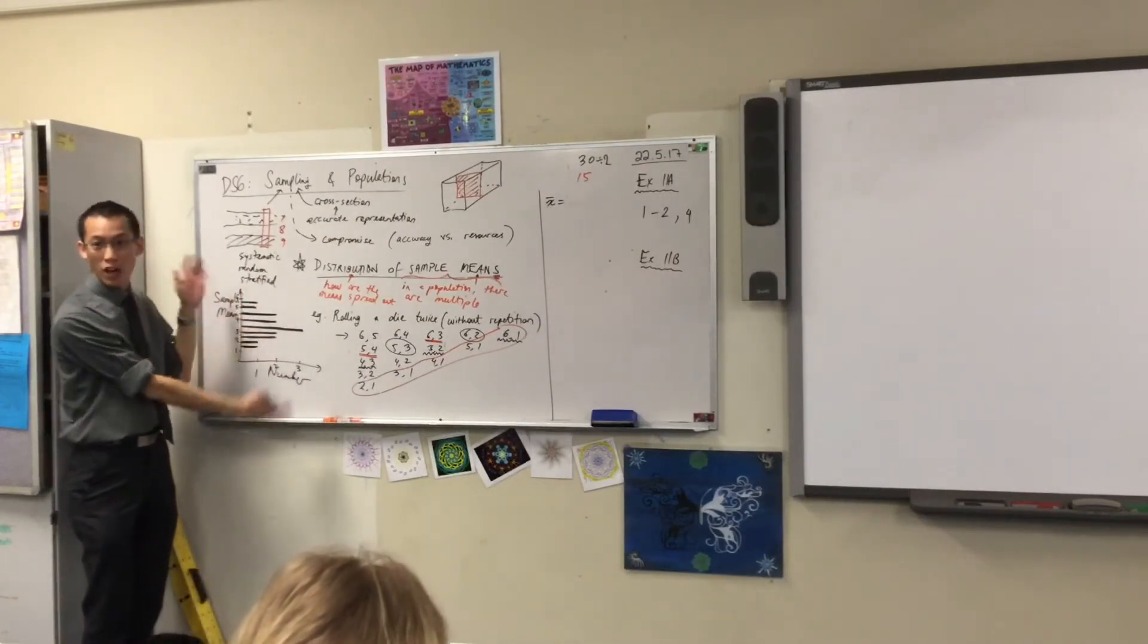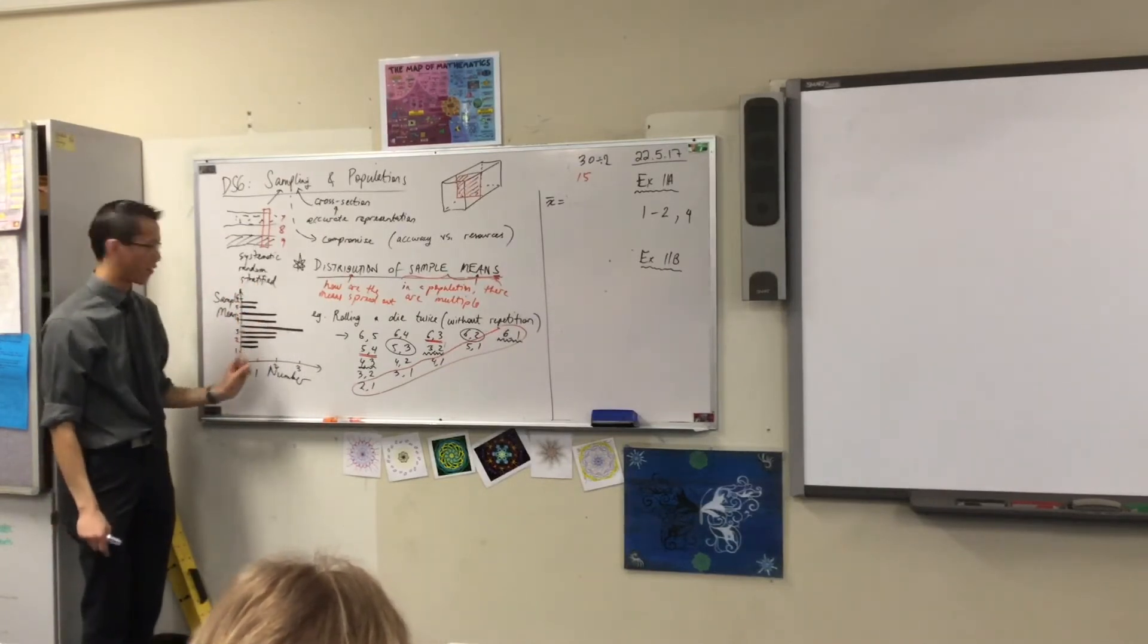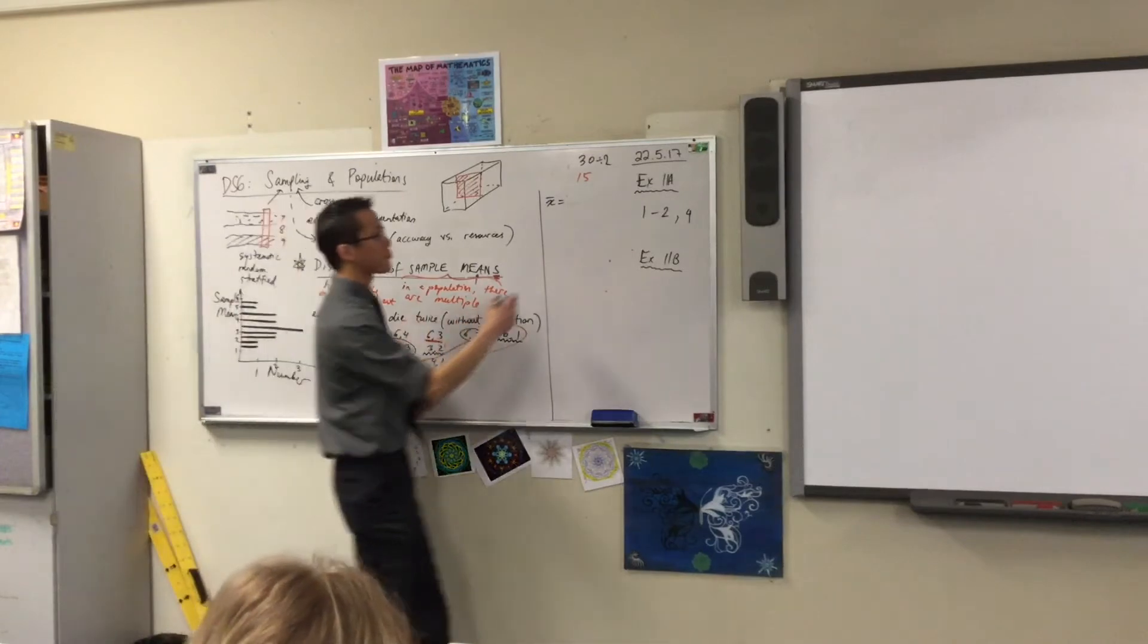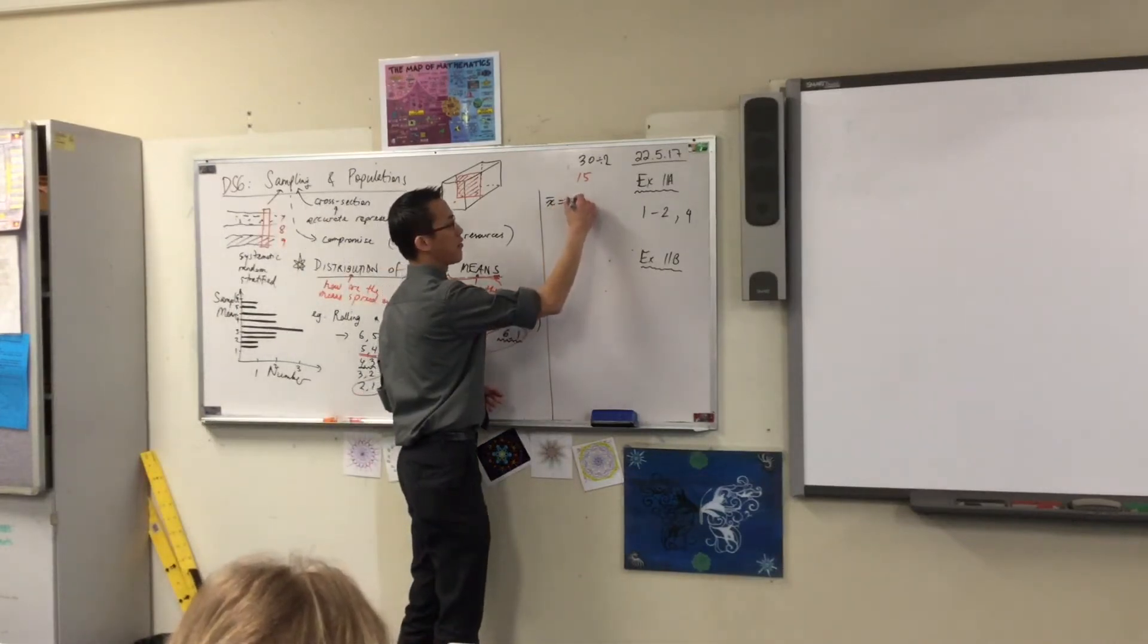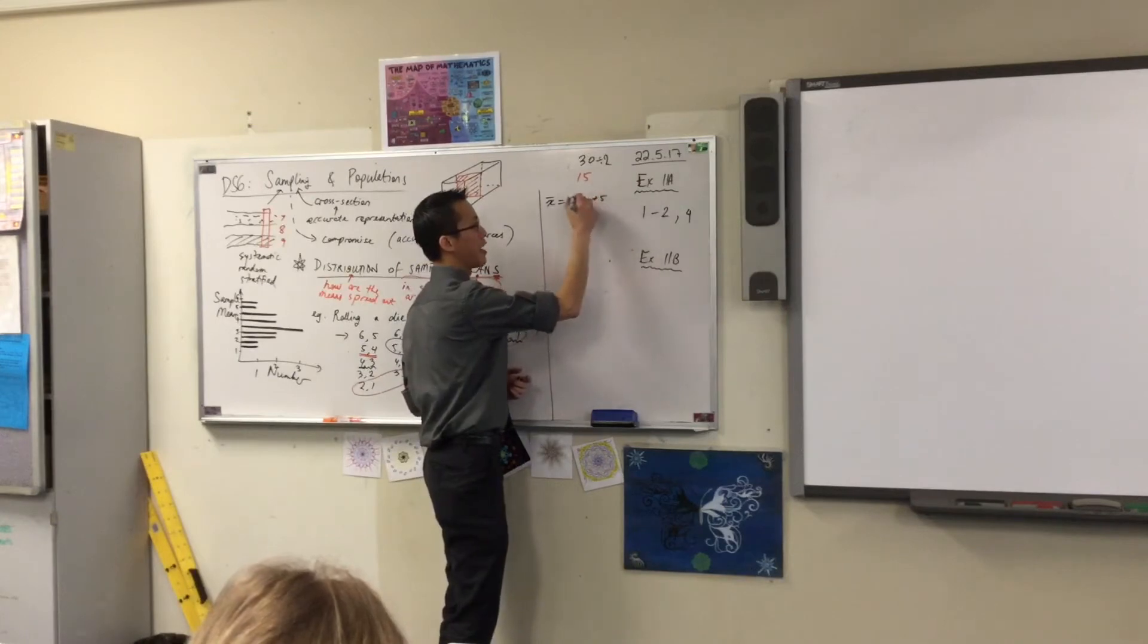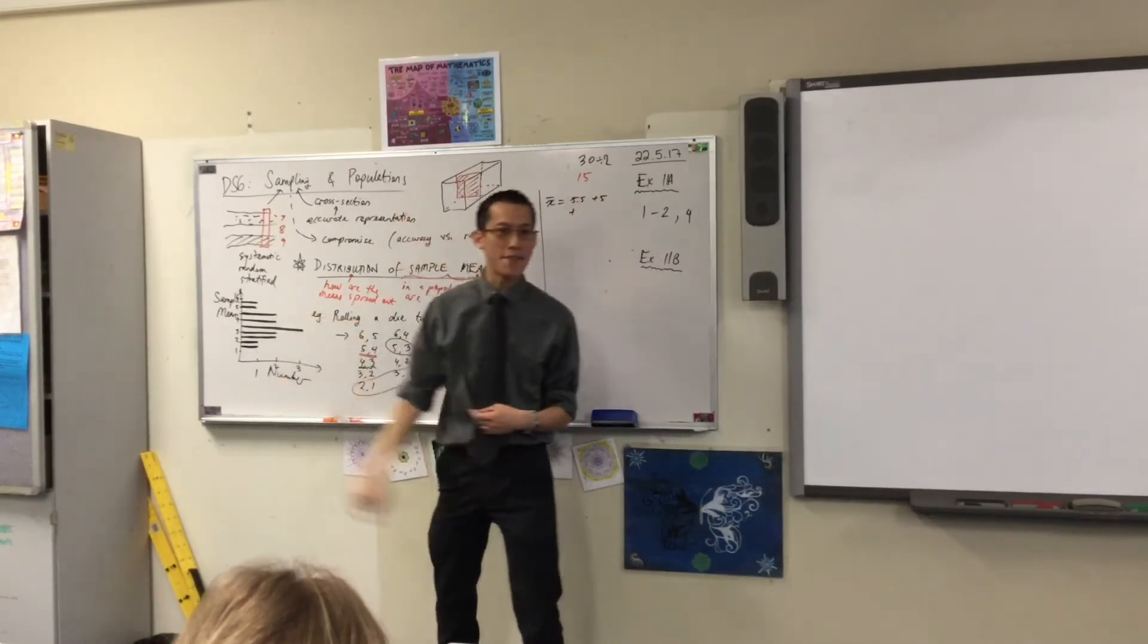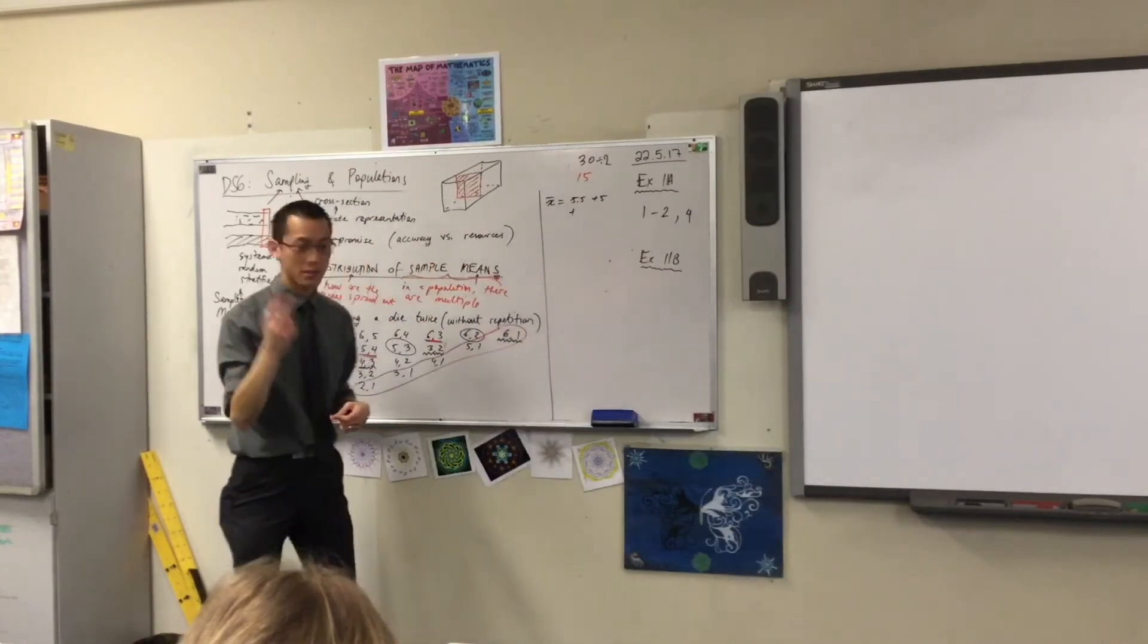Now you can read quickly off this, you don't have to do it 15 times because there's double ups along the way, right? So have a look, you can see there's 5.5, we mentioned that one, that only happens once. Then there's 5. But then when you get to 4.5, it happens twice.